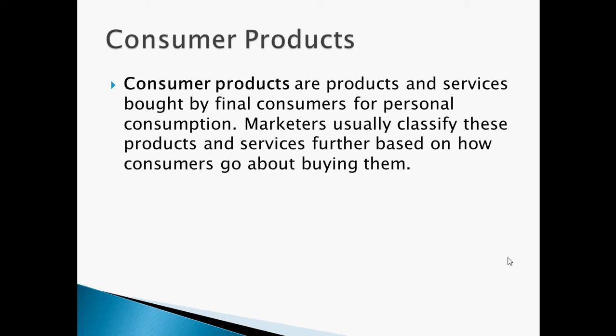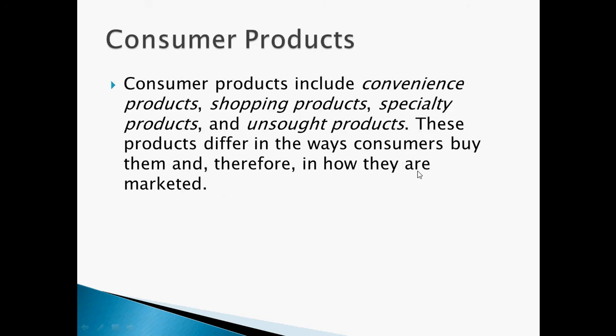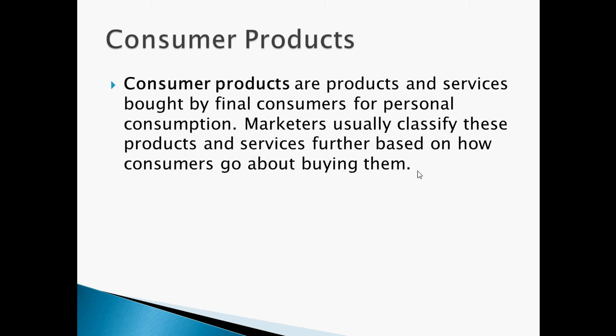Consumer products are products and services bought by final consumers for personal consumption, and marketers classify these products and services further based on how consumers go about buying them. Consumer products include convenience products, shopping products, specialty products, and unsought products — classified in the ways consumers buy them and therefore in how they are marketed.